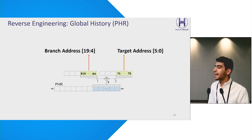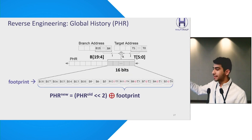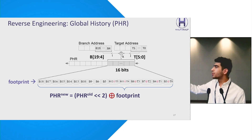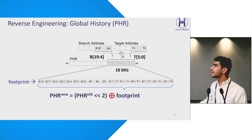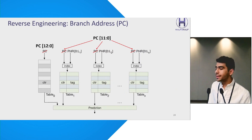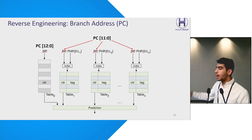In the Skylake microarchitecture, we found that the PHR is updated using six lower bits of the target address and bits 19 to 4 from the branch address. These bits are combined to form a 16-bit number called the branch footprint, which is then used to update the PHR. The PHR update policy works like this: when a branch is taken, the PHR shifts by 2, and its lower 16 bits are XORed with the 16-bit footprint. Additionally, the 12 lower bits of the branch address are used as index and/or tag alongside the PHR in global predictors, while 13 lower bits of the branch address are used as the index in the local predictor.